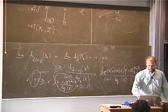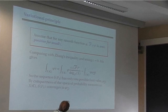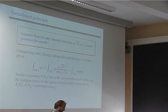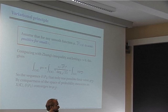By compactness of the space of probability measures, there is only one limit value. The sequence of measures δ_{P_k} has only one possible limit value, and by compactness of the space of measures on a compact metrizable space, the sequence δ_{P_k} converges to this limit value.